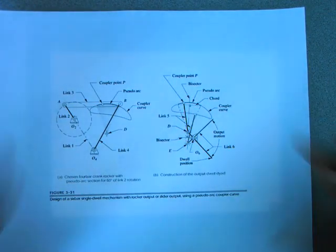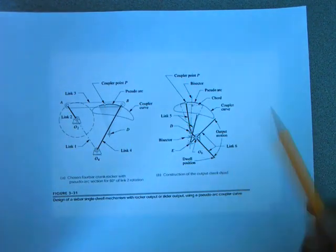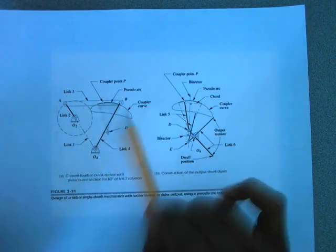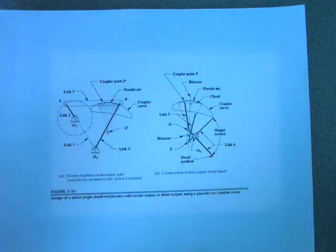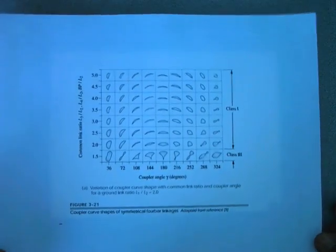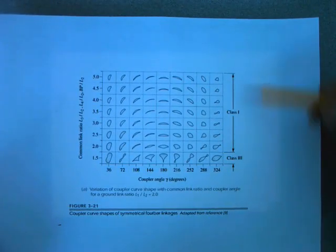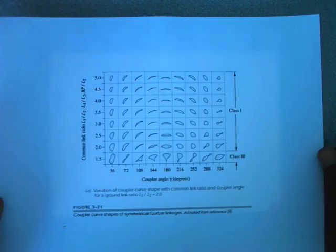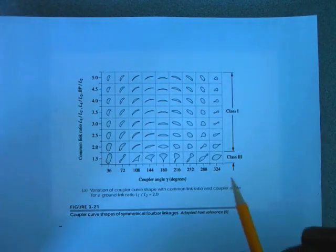So how do we go about creating that? Well, the first thing that we need to do is we need to come up with a linkage that creates a coupler curve that has an arc in it, a circular portion. And so we turn to our text, to our figure. This is one of the tables in the text with a lot of coupler curves that we can choose from.